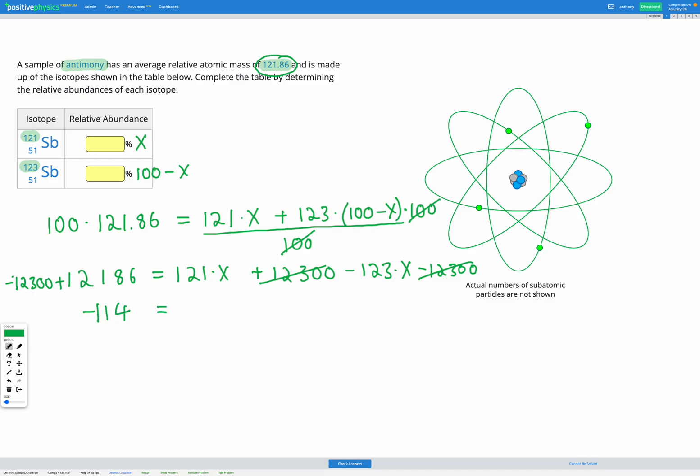And on the right hand side, I'm doing 121x minus 123x, which is minus 2x. So my last step is going to be just to divide by minus 2 on both sides. So that will cancel out. So to get my answer, it's going to be 114 divided by 2, which gets me 57 for x.